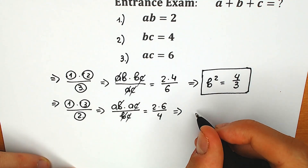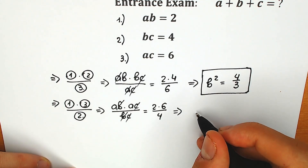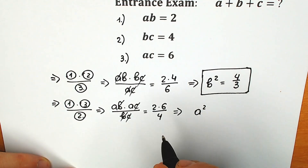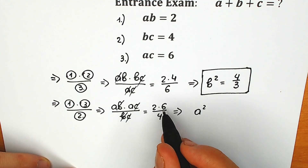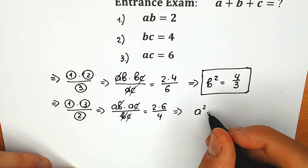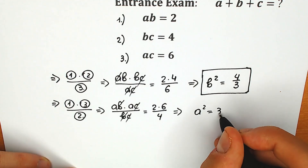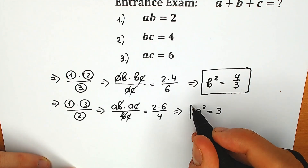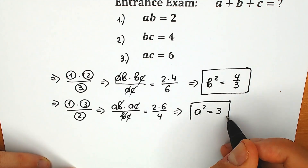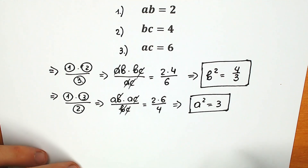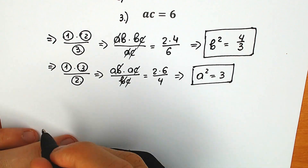So this is our a squared. On the right side we have 2 times 6, which is 12, divided by 4, equal to 3. So a squared equals 3. This second expression is extremely important for us.